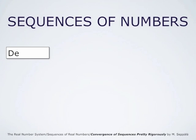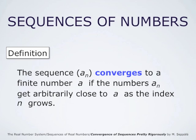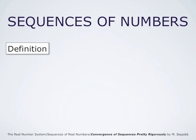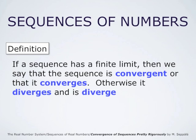We say that a sequence converges to a finite number a if the numbers of the sequence, that is the numbers a_n, get arbitrarily close to a as the index n grows. Later, we will define convergence again in more precise terms. If this sequence has a finite limit, then we say that the sequence is convergent, or that it converges; otherwise it diverges and is divergent.